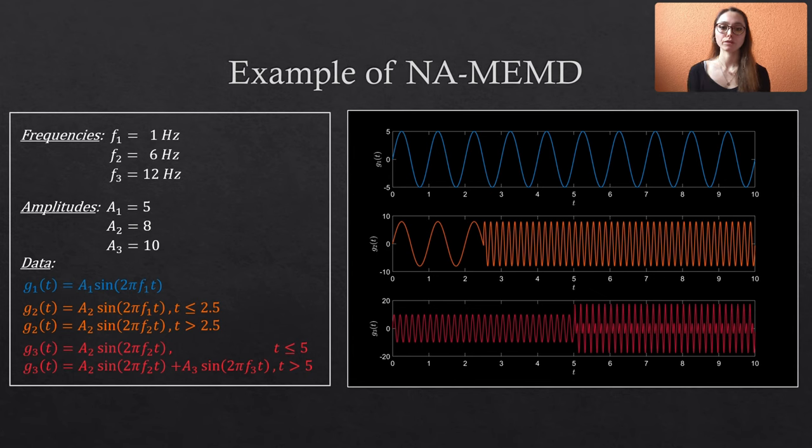The third, a red signal G3, starts with a sine wave of 6 Hz and an amplitude of 8, and at t equals 5 another sine wave is added to the data with a frequency of 12 Hz and an amplitude of 10.